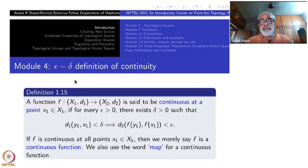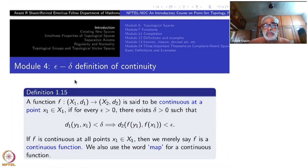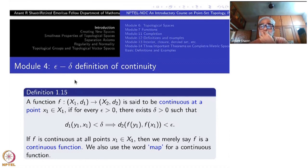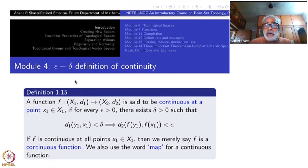Take a function f from (X1, d1) to (X2, d2). That means X1 is a set and d1 is a metric on it; X2 is a set and d2 is a metric on it. The function is a function from X1 to X2. Take a point x1 in X1. A function f will be called continuous at x1 if the following happens: for every epsilon positive, there exists delta positive such that d1(y1, x1) less than delta implies d2(f(y1), f(x1)) is less than epsilon.